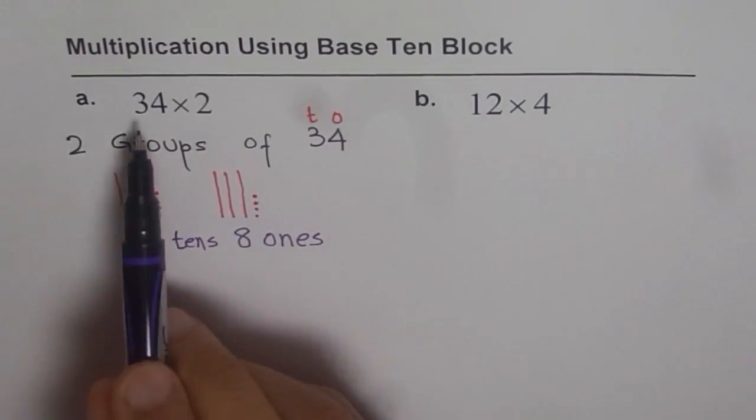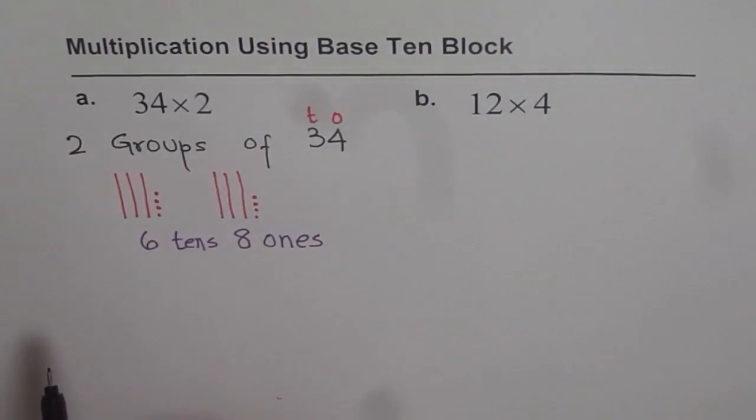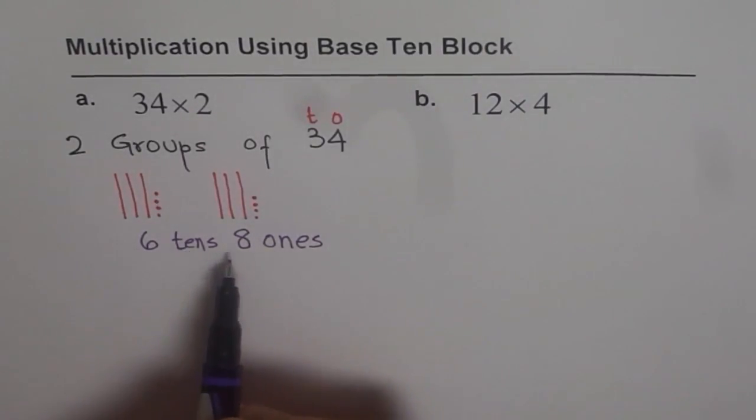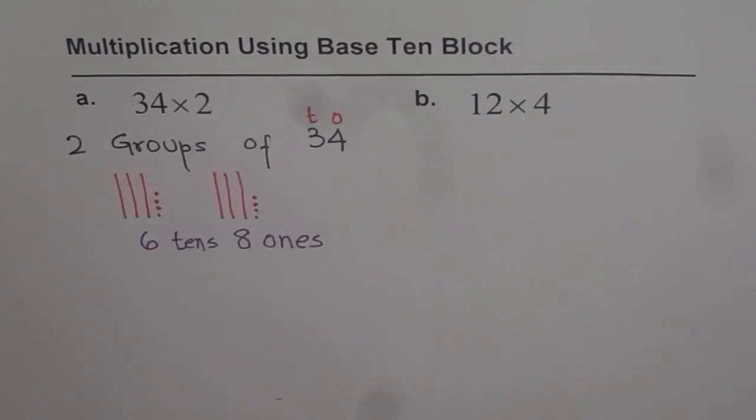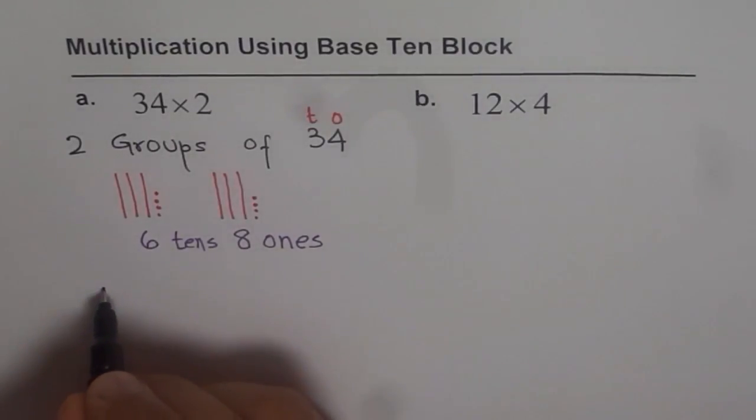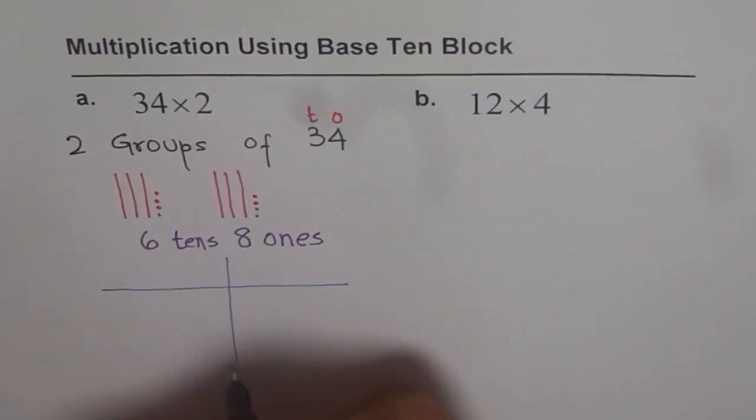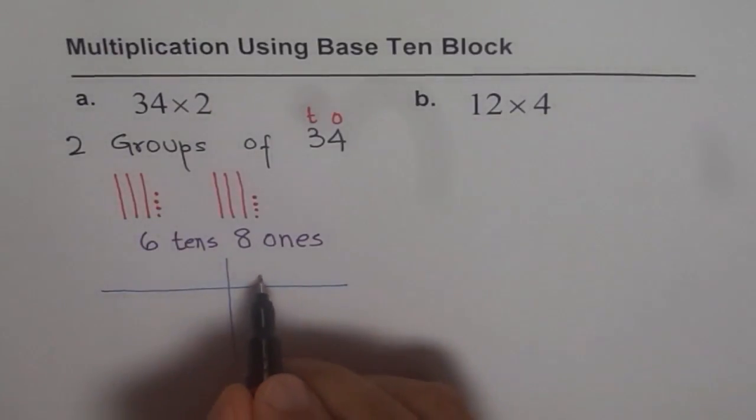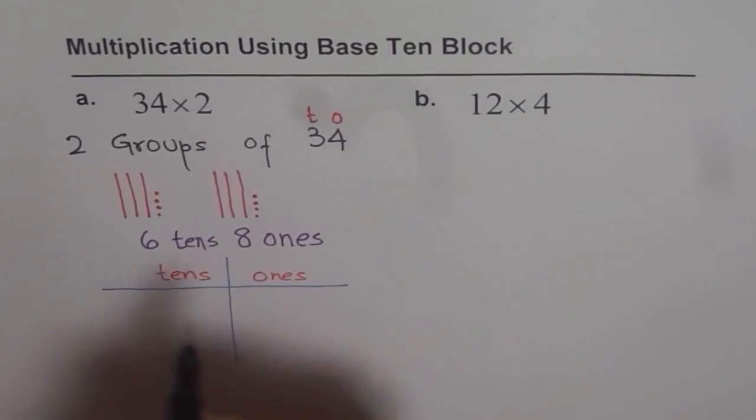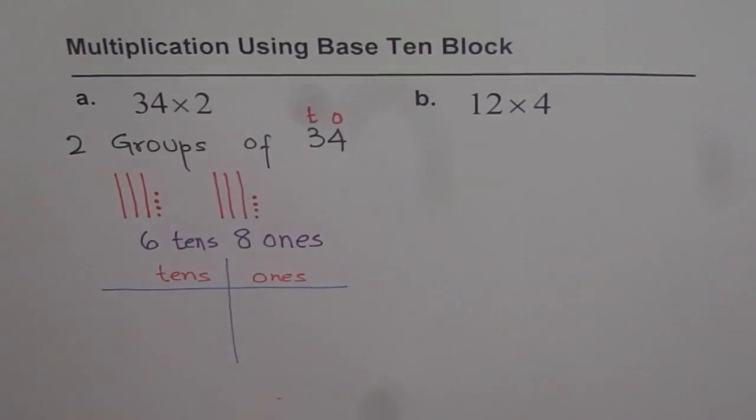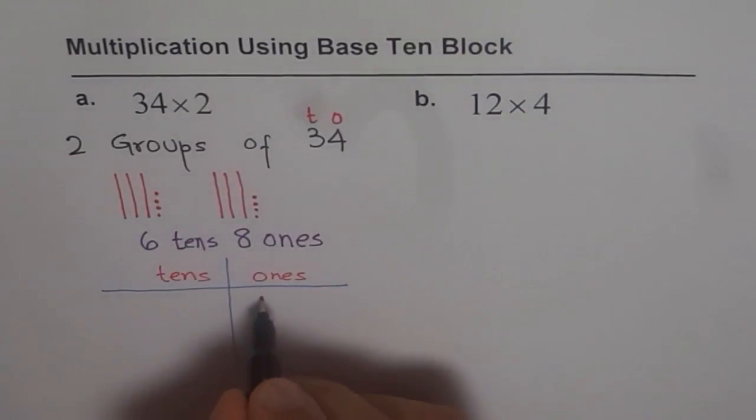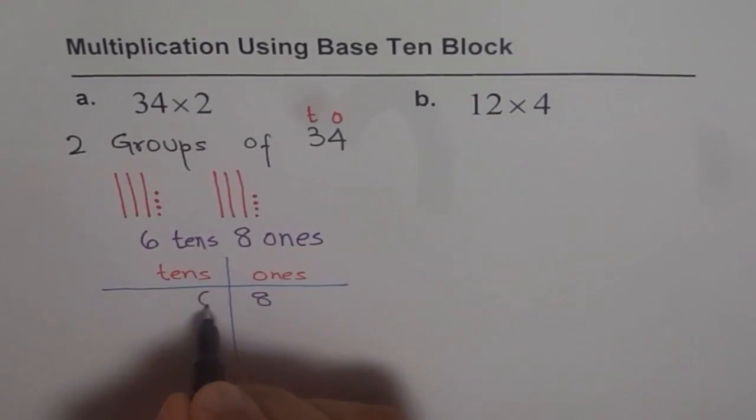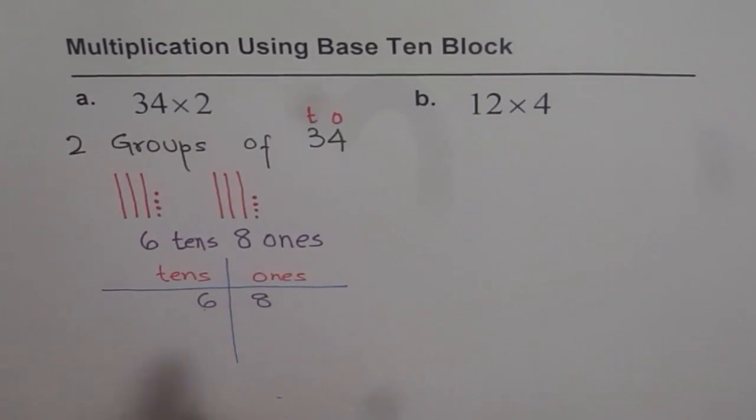That means 34 times 2 is 6 tens and 8 ones. So that means the number 68, right? So you can always write this as 6 tens and 8 ones, correct? So let me write this as 68. See, these are my ones and these are my tens. And the number is 6 tens and 8 ones. So 8 ones and 6 tens. The number is 68. Do you see that?